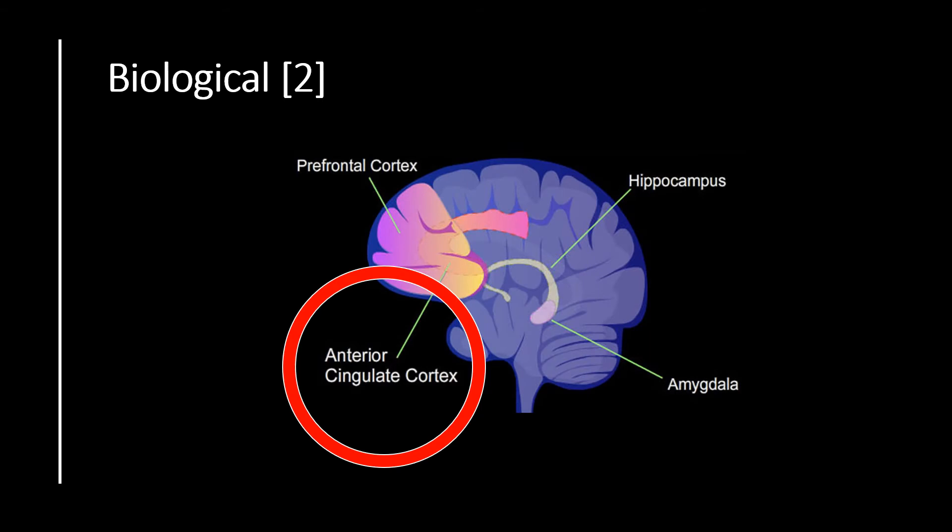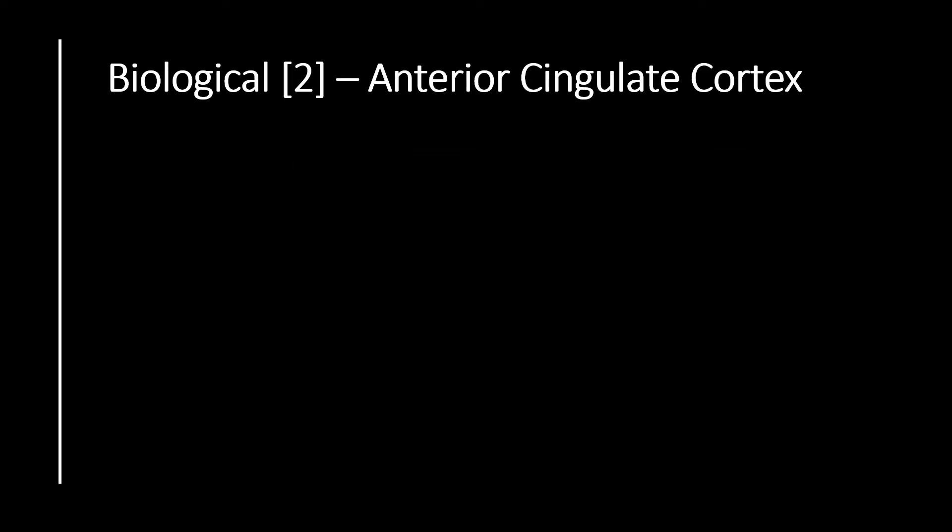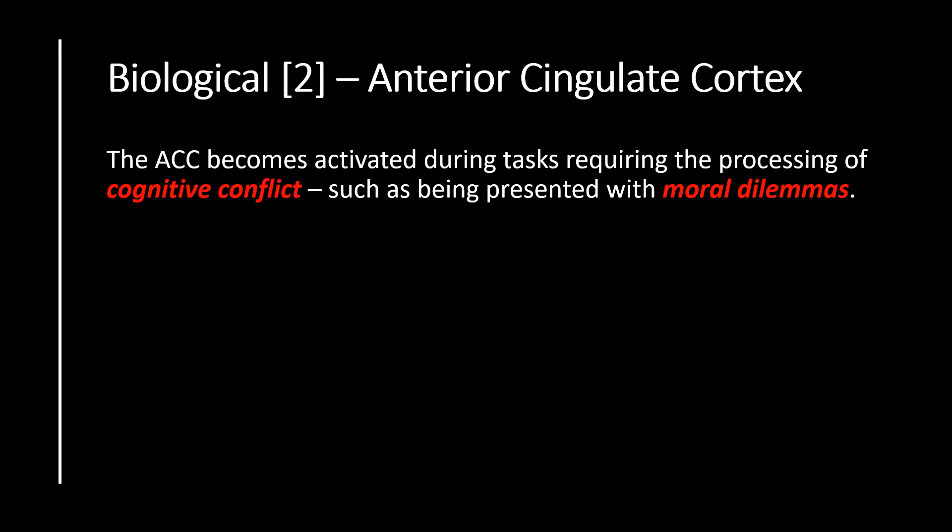Secondly, we move on to discuss the anterior cingulate cortex, an area of the prefrontal cortex. The anterior cingulate cortex is an area of the brain which becomes activated during tasks requiring the processing of cognitive conflict, such as being presented with moral dilemmas. An example is the hypothetical situation with an unstoppable train whereby you have to make the decision to swap the tracks so that the train kills one person instead of five — you are presented with a moral dilemma and must make a moral choice.